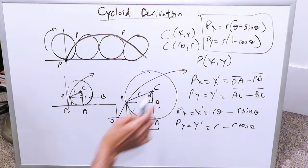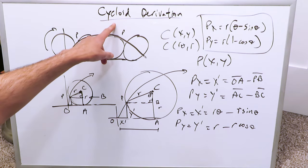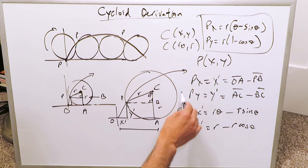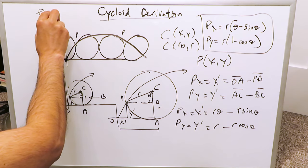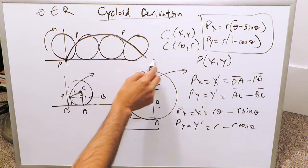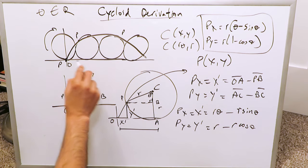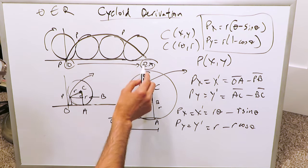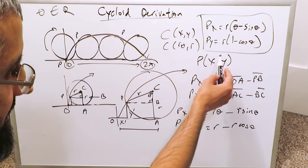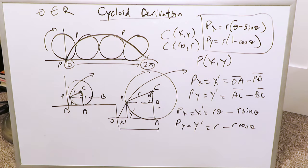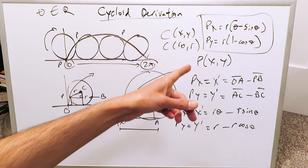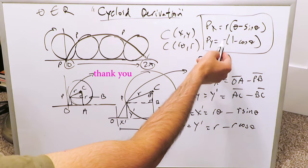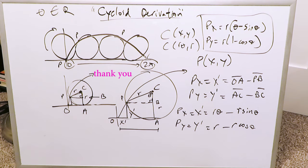These parametric equations represent and describe any point on the cycloid, so the derivation is complete. The angle theta is always an element of all real numbers. Each arch of the cycloid is generated from one complete rotation of the circle, from 0 to 2π. Then the next arch goes 0 to the next 2π, and so on. Those are the two parametric equations to remember, and the derivation is complete. Thank you for watching. Have a good day.